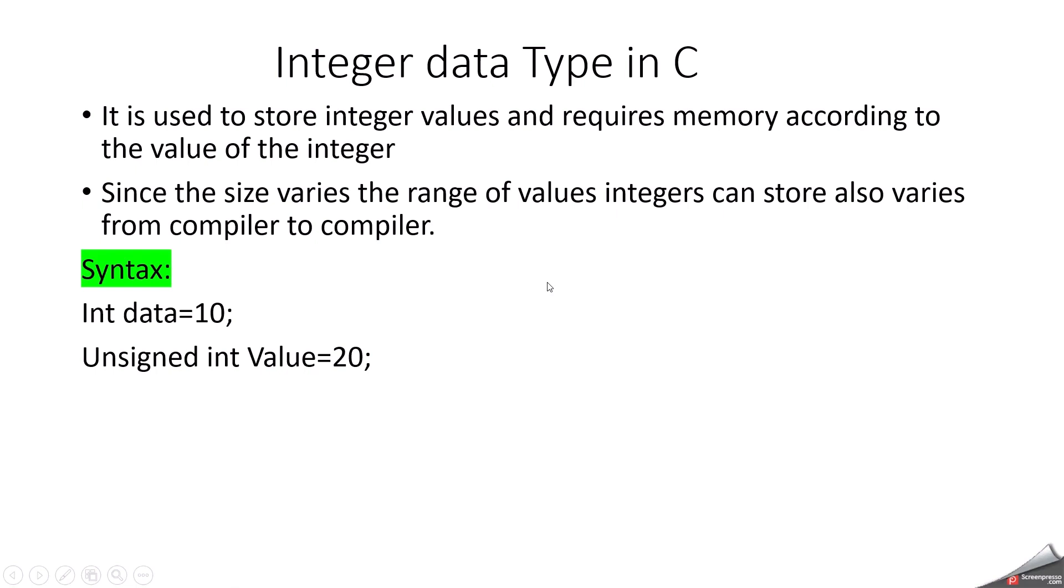Integer data type is mainly used to store integer values and requires memory according to the value of the integer. Since size varies, the range of values integer can store also varies from compiler to compiler. So you have to be very careful when you are going to type a program. First you can understand whether you are doing it in 32-bit or 64-bit. Recently all compilers or modern systems come up with 64-bit. First you can find the size and based on that you can decide. The syntax for declaring integer variable: int data equals 10. For unsigned integer, you have to use the keyword unsigned. Unsigned int value equals 20. This is the way you have to declare your integer values or integer data type.